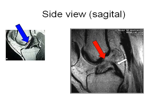The side or sagittal view is the best MRI for viewing a normal anterior cruciate ligament. As shown in blue, the red arrow shows a torn or missing ACL. The white arrow shows a normal, dark, posterior cruciate ligament traveling up and behind the torn ACL.